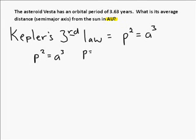P stands for period. Okay, and that is the thing that we were given in our problem here, the period, 3.63 years.